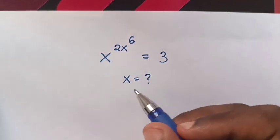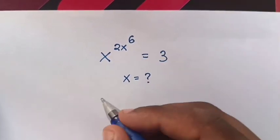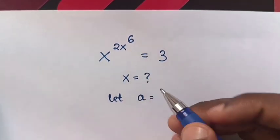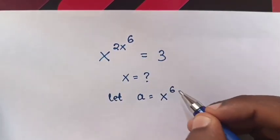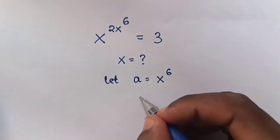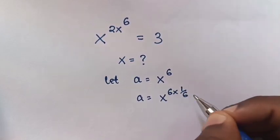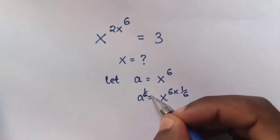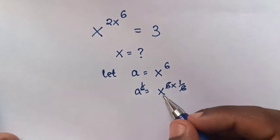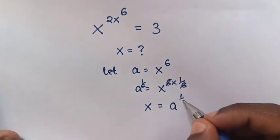First, we let x power 6 is equals to a. So, let a is equals to x power 6. Now, to find the value of x in terms of a: from a is equals to x power 6, we multiply by power of 1 over 6 on both sides. So, this 6 and 6 will cancel. Therefore, x will be equals to a power of 1 over 6.